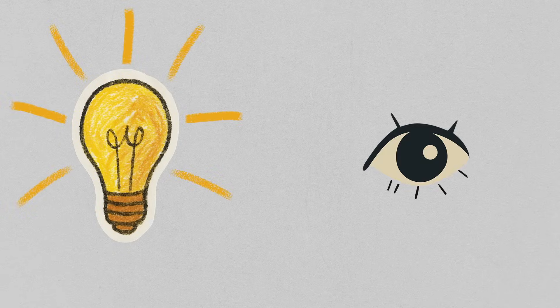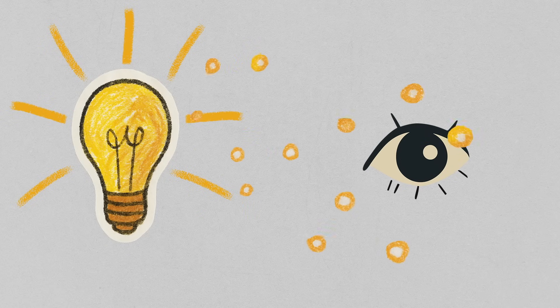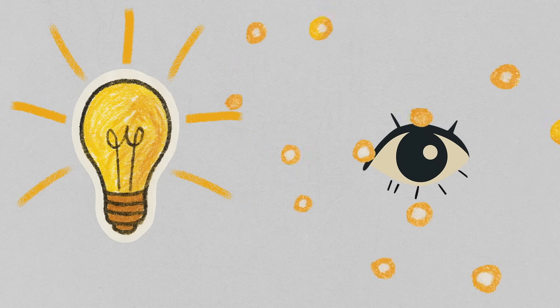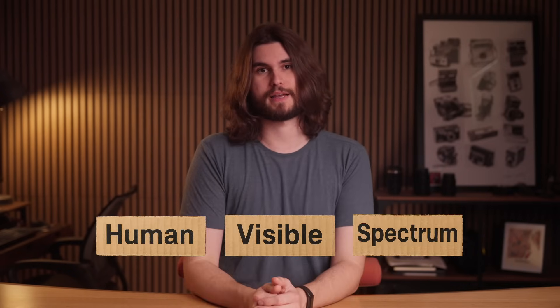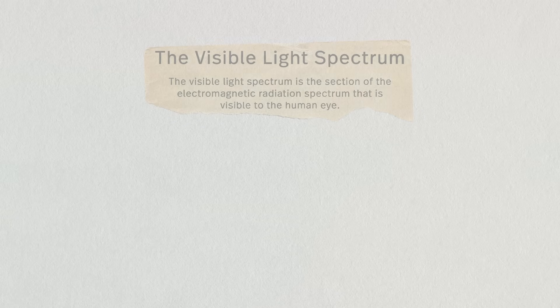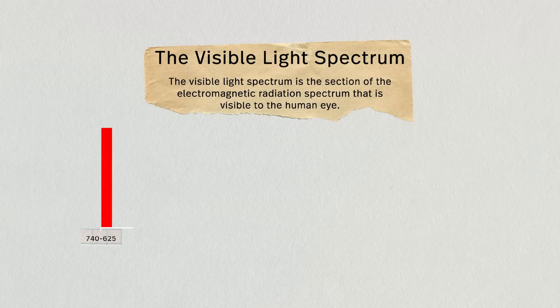What is light? Light is electromagnetic radiation that can be perceived by our eye. In short, it's waves which propagate through space containing electromagnetic radiant energy. We can only see a small section of the entire electromagnetic field, which we call the human visible spectrum.